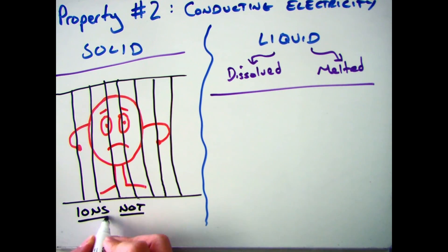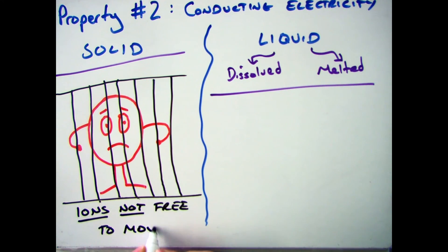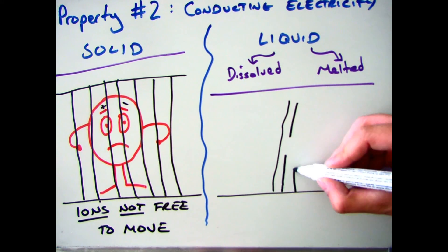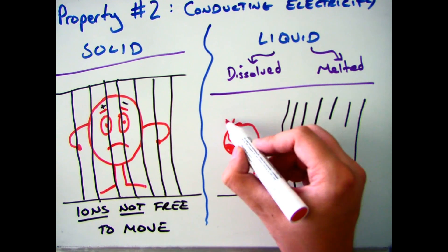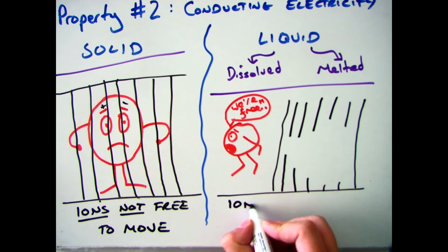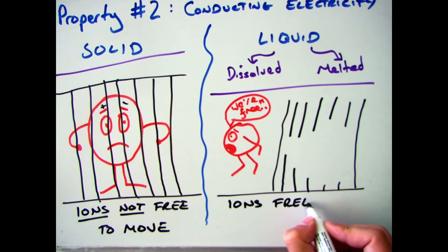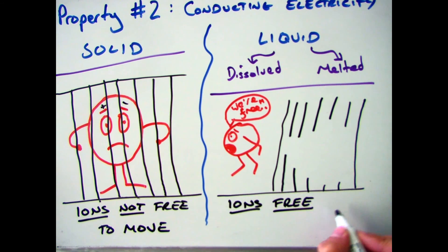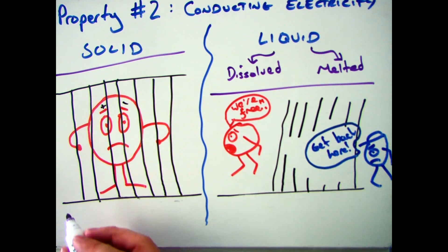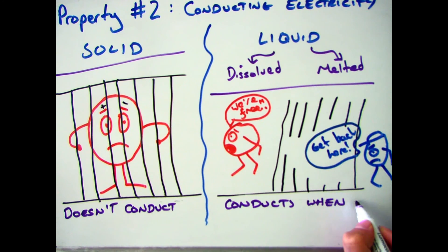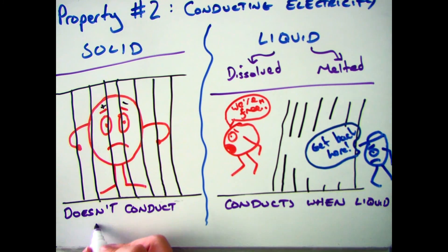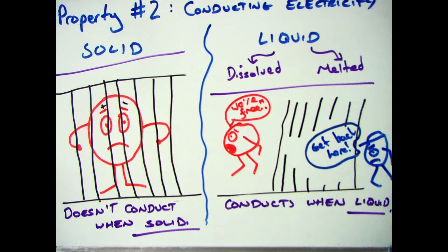There's a strong force of attraction in ionic compounds, and that means that the ions when it's a solid are not free to move. But when you heat it up, those ions gain more energy and they become dissociated, which means that they become free to move. So in summary, ionic compounds do not conduct when they are solid, but they do conduct when they are liquid or molten because the ions become free to move.